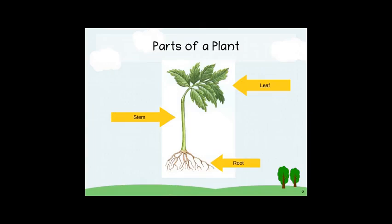Let's talk about the parts of a plant. Most plants have the same basic parts. Each part helps the plant get water, air, minerals, and light that it needs to survive. The roots of a plant have important jobs. Roots usually grow down in the soil. Most plant roots anchor or hold the plant in place, and help keep the plant upright. Roots absorb water and minerals from the soil. Minerals are the nutrients that help plants grow and be healthy. The roots also store some of the food made by the plant.